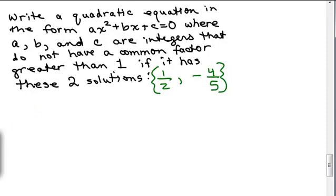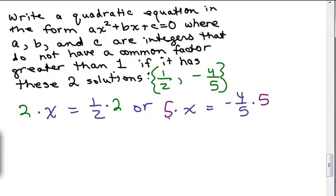So we've got either x equals 1 half or x equals negative 4 fifths, right? That would have been the previous step. Now, we do want to get rid of these fractions, so on the left-hand side, let's multiply by 2 because that's the least common denominator. And on the right-hand side, multiply both sides by 5 because that's the least common denominator. So on the left-hand side, this equation becomes 2x equals 1.